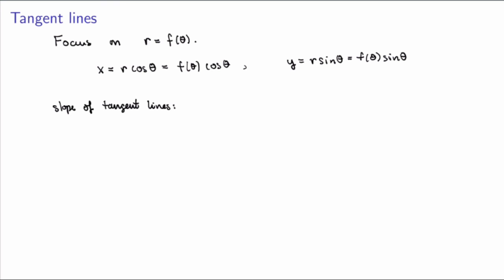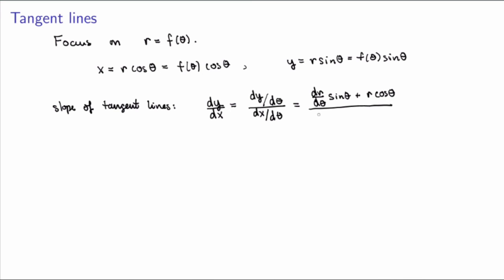We can use what we've learned about parametric curves to get the slope of the tangent lines to a polar curve. The slope is given by dy/dx. Since y and x are functions of the parameter theta, this equals (dy/dθ)/(dx/dθ). Now y = r sinθ where r is a function of theta, so by the product rule dy/dθ = (dr/dθ)sinθ + r cosθ. And dx/dθ = (dr/dθ)cosθ − r sinθ. This gives us an expression for the slope of the tangent lines to any polar curve written in the form r = f(θ).